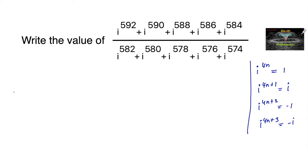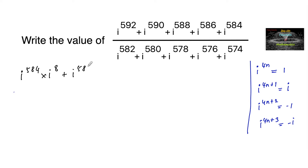In this problem, looking at the numerator with powers 590, 588, 586, 584, the smallest number is 584. If we take i to the power of 584 as common, then i to the power of 592 becomes i to the power of 584 times i to the power of 8. So the numerator becomes: i to the power of 584 times i to the power of 8, plus i to the power of 584 times i to the power of 6, plus i to the power of 584 times i to the power of 2.